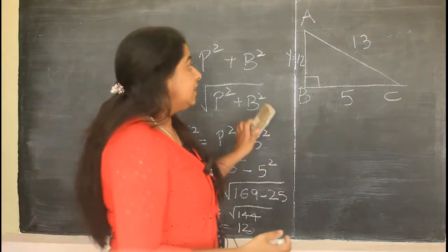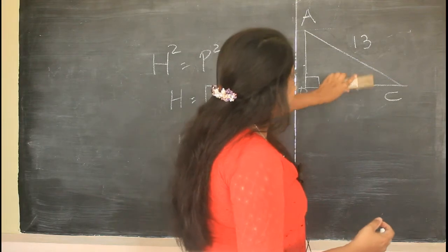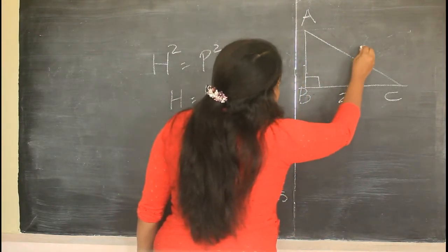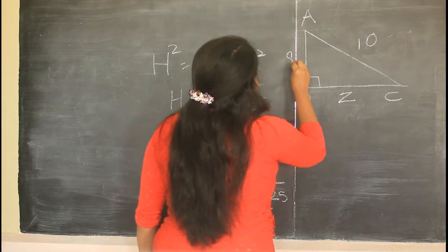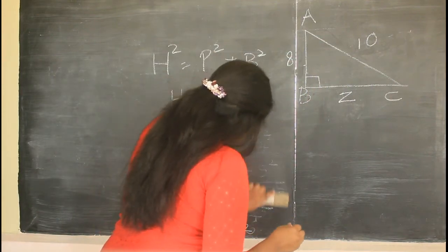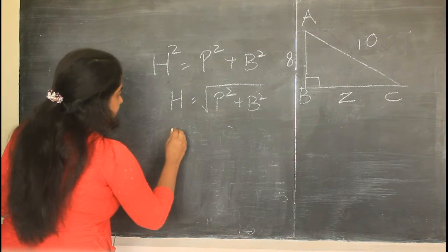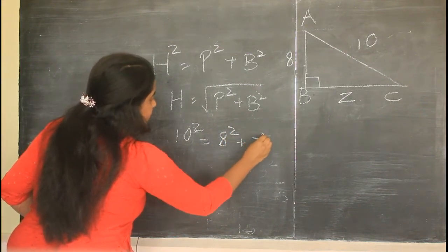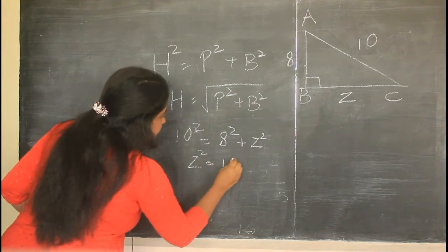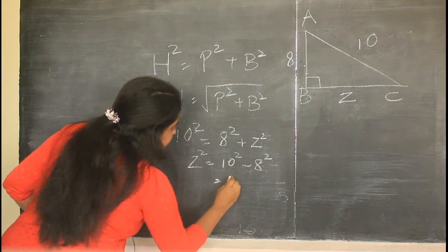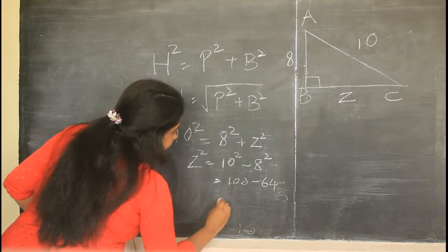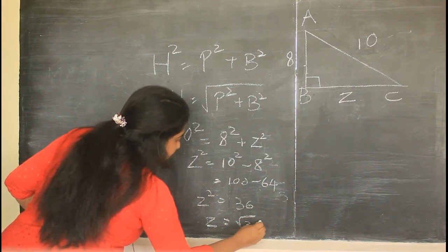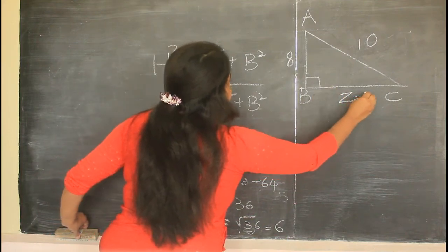Now the same thing can be applied even when the base is unknown. Here you have to calculate the base and the hypotenuse is given as 10, with the perpendicular as 8. So 10² = 8² + z², meaning z² = 10² − 8² = 100 − 64 = 36. Therefore z = √36 = 6.